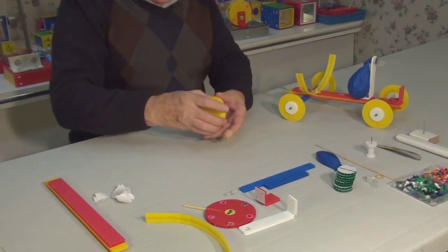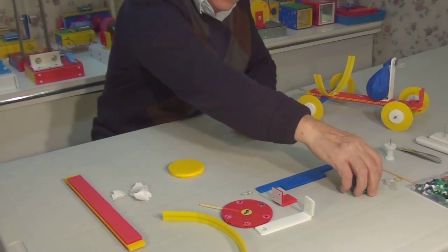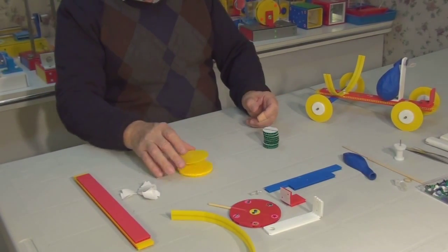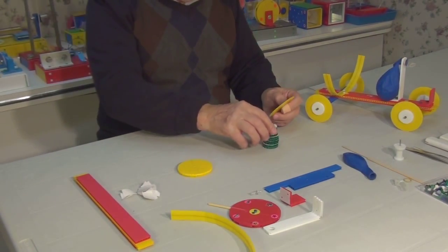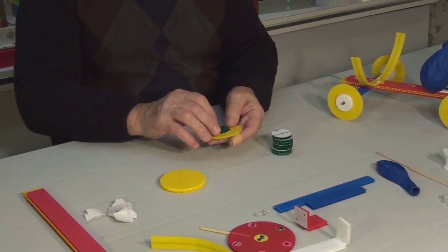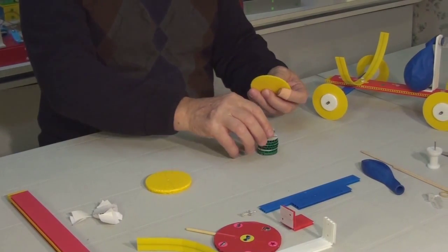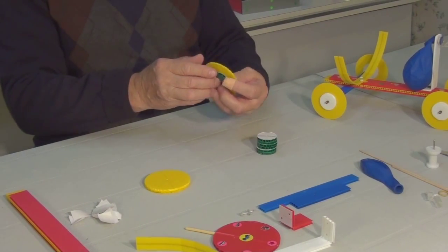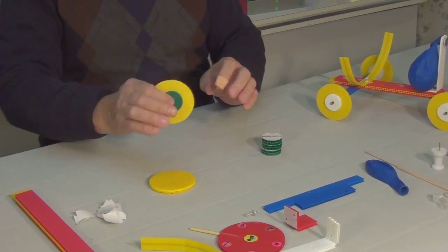Now we will be making our wheels. Every wheel consists of three parts: the middle, the thinner disc, and the two thicker discs on both sides of it. These are hubs. They add thickness to our wheels.